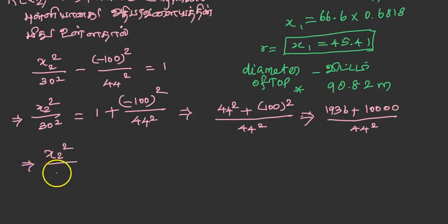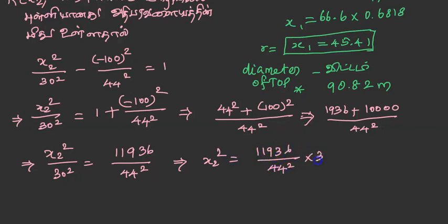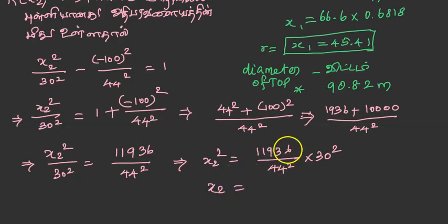x₂² / 30² equals 1 plus 11936 / 44². Next step: x₂² equals 11936 / 44² times 30². Dividing, then multiplying: x₂ equals the square root of 11936 times 30² divided by 44² root.